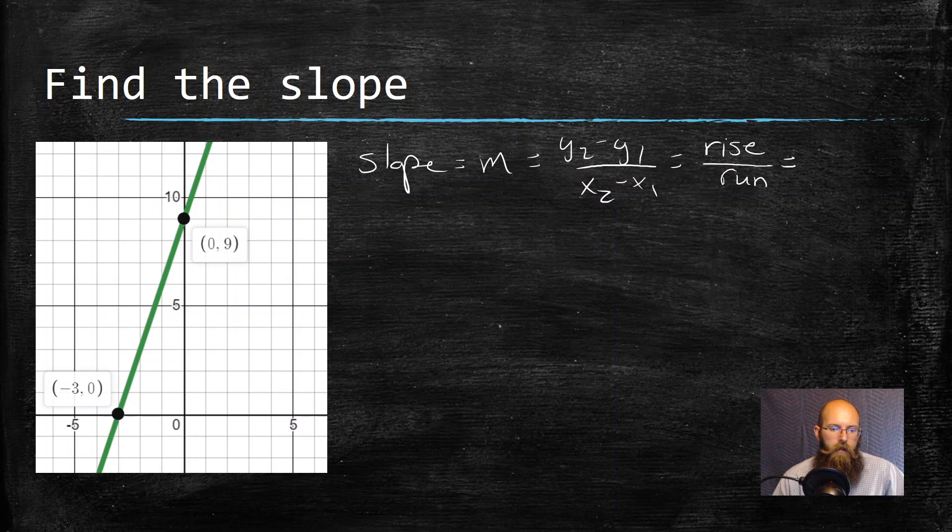So I start off here, I start off at this coordinate point over here. And that's where I know I cross at a nice pretty point. That's the point negative three, zero. So I start there, I'm going to count up one, two, three, four, five, six, seven, eight, nine and then over one, two, three. So I rise nine, and I run three.